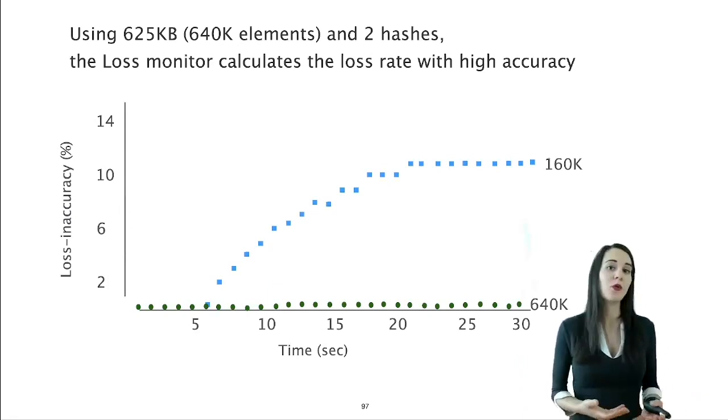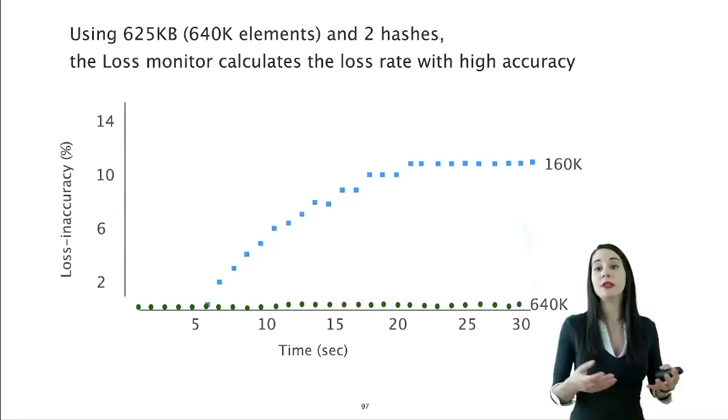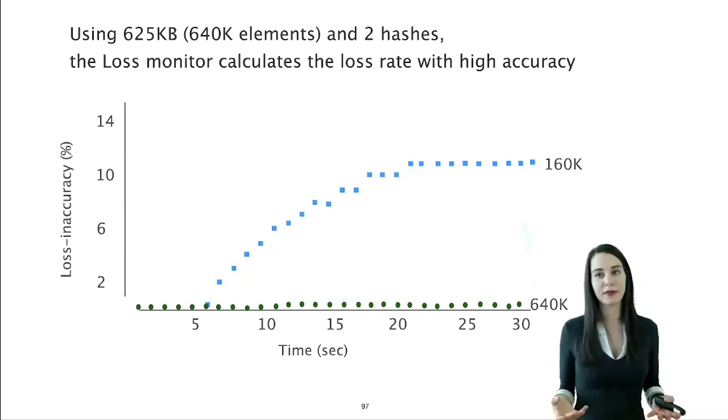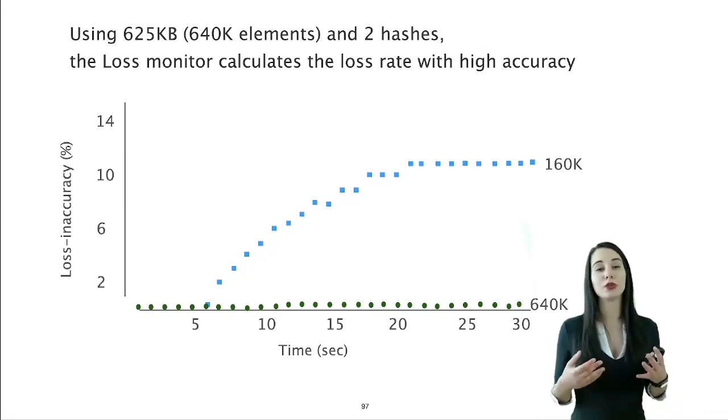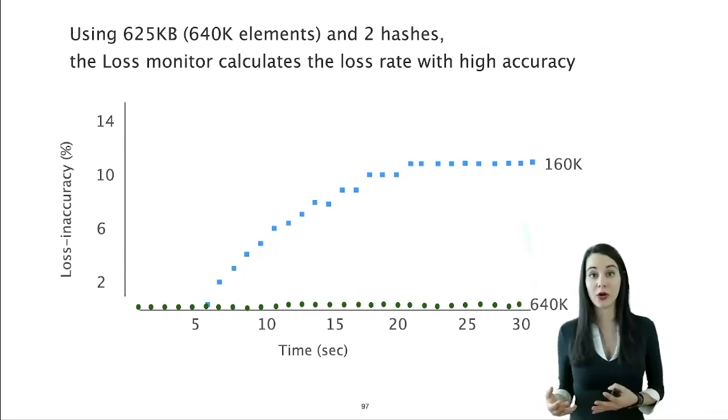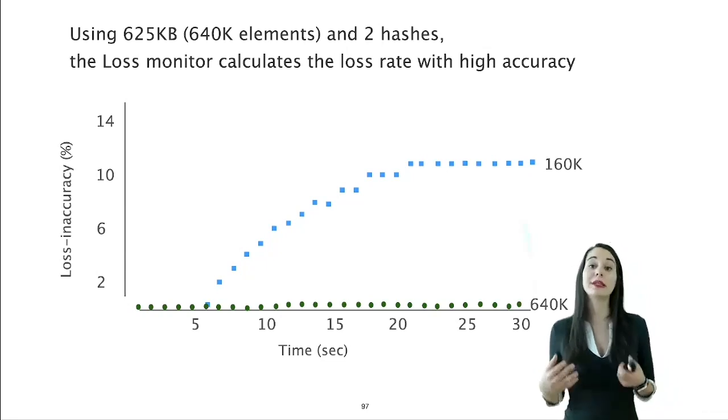We observe that the loss monitor gets polluted over time due to the noise in the CAIDA traces. As an intuition, flows that finished unexpectedly will be kept in the CMS, effectively increasing the false positive rate and the monitor's inaccuracy. The same holds for flows that have a retransmitted packet or a reordered packet. Still, a loss monitor with capacity of 640k elements, which correspond to 60-125 kilobytes of SRAM, will remain healthy for at least 30 seconds.